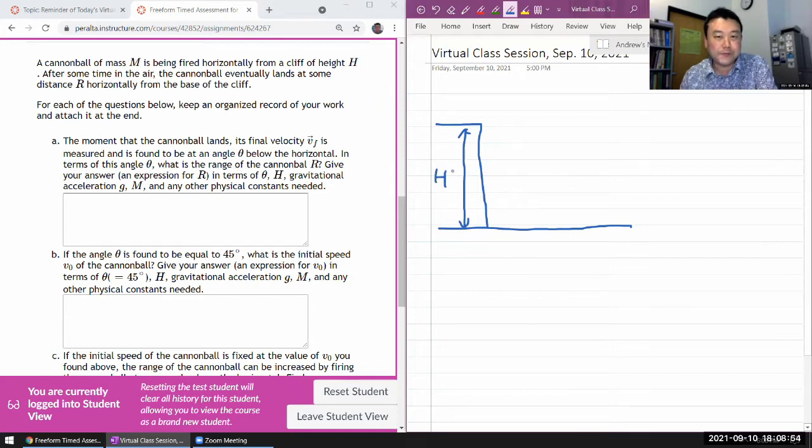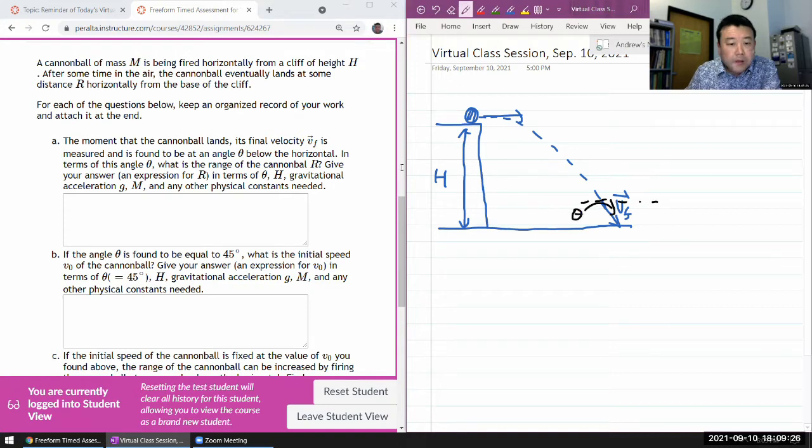I do have a benefit of being very familiar with these questions. But even so, this is an especially long question, so I have to do it quickly. It's being fired. They're not telling me initial velocity. Let me keep going. The final velocity is measured. The cannonball lands, and it's saying that final velocity is measured and found to be at an angle theta below the horizontal.